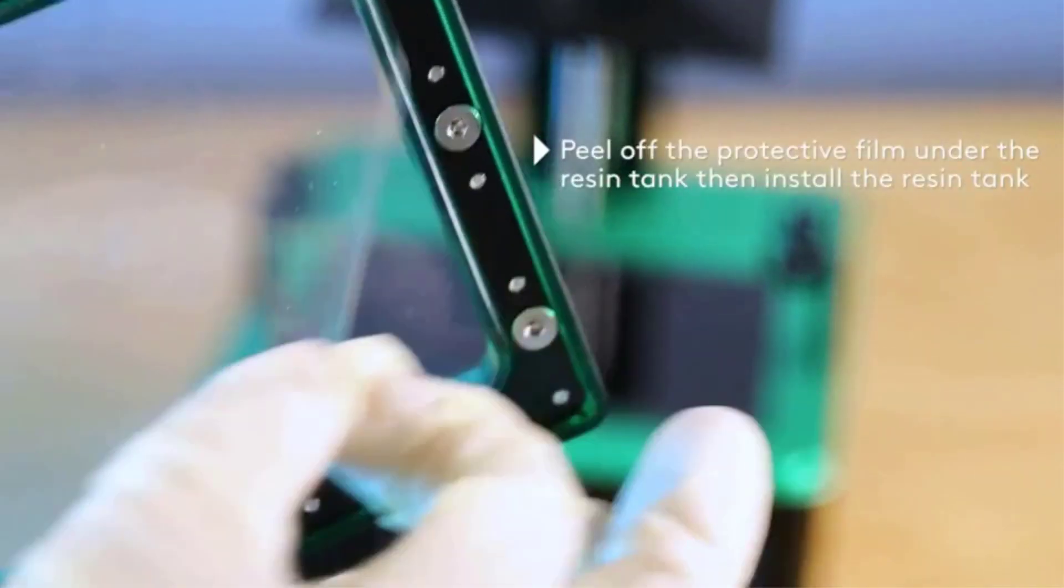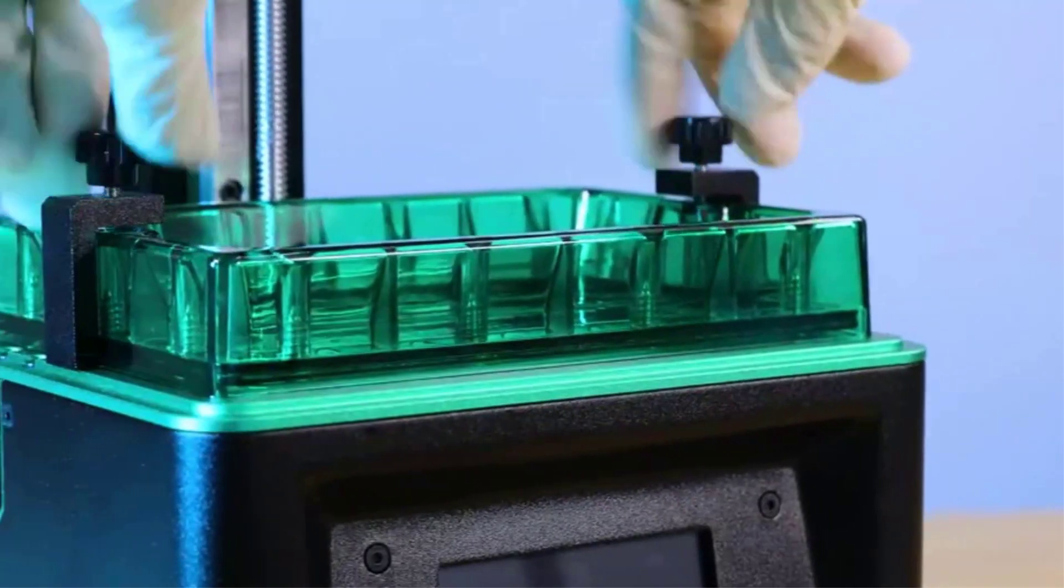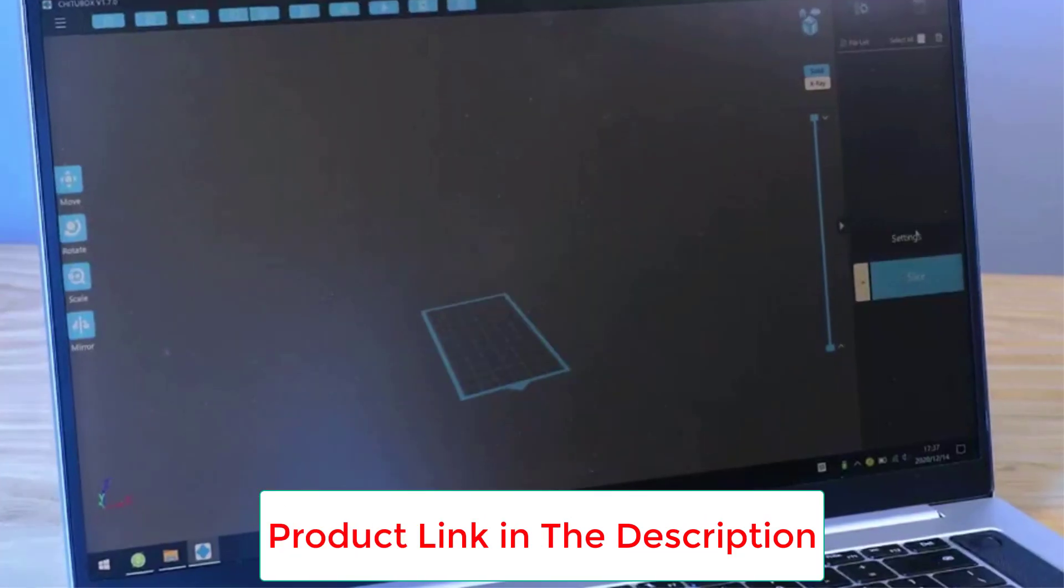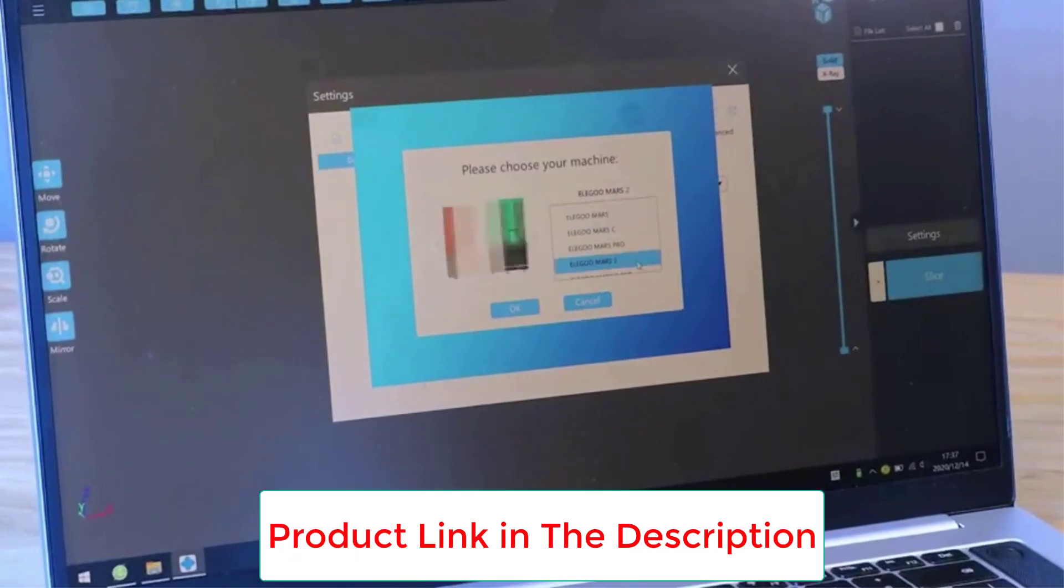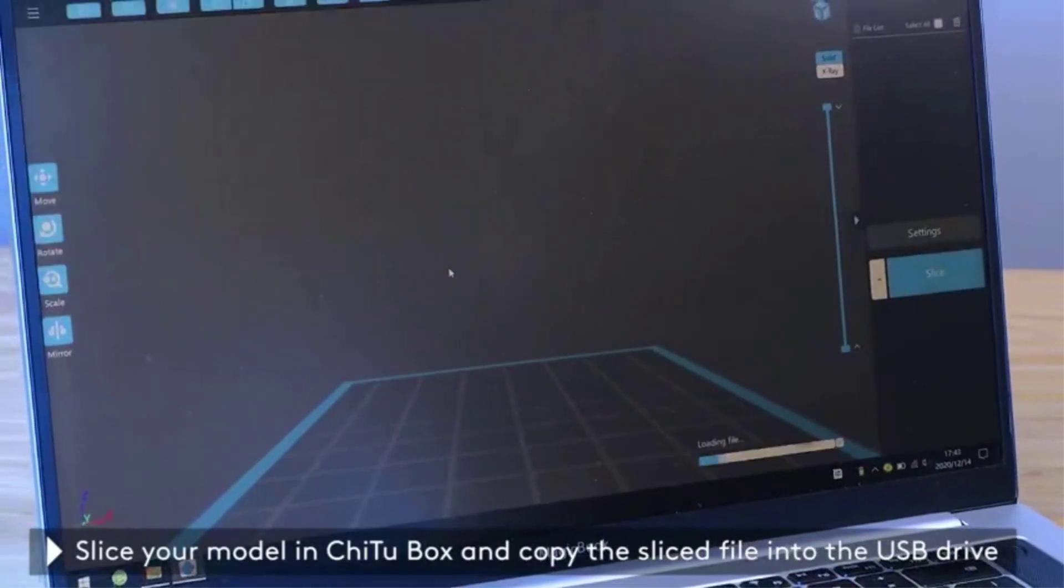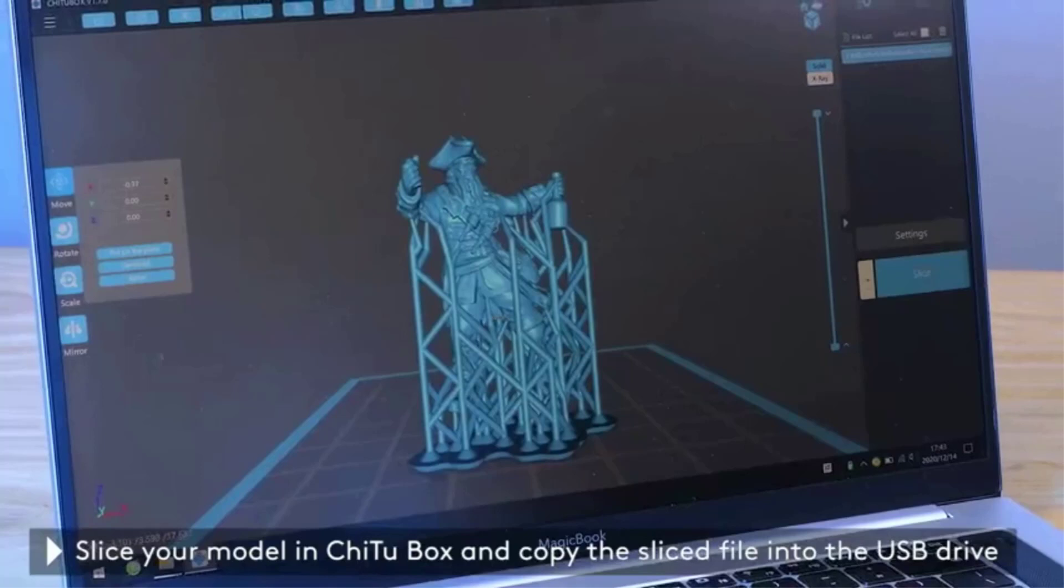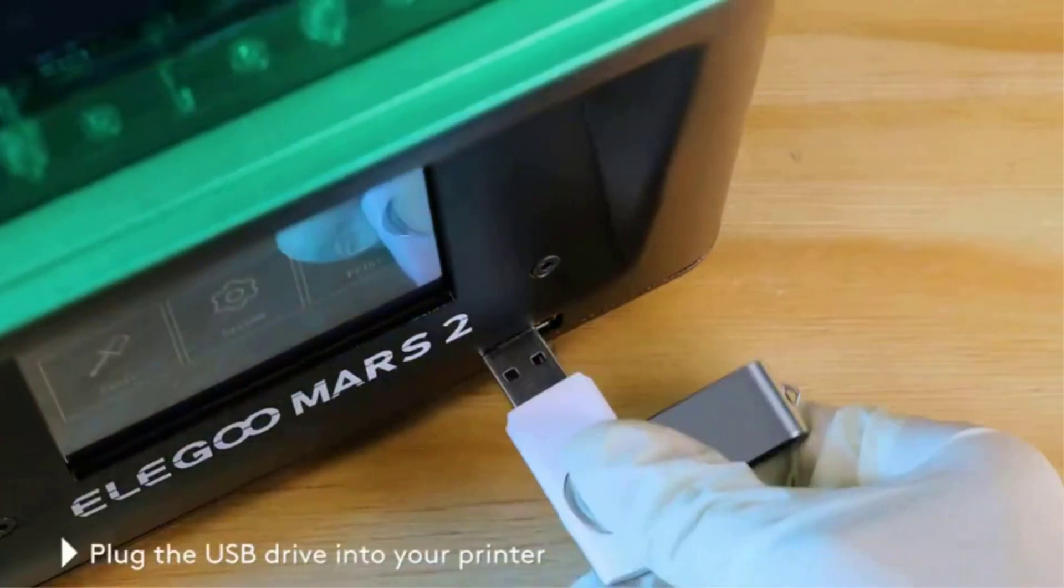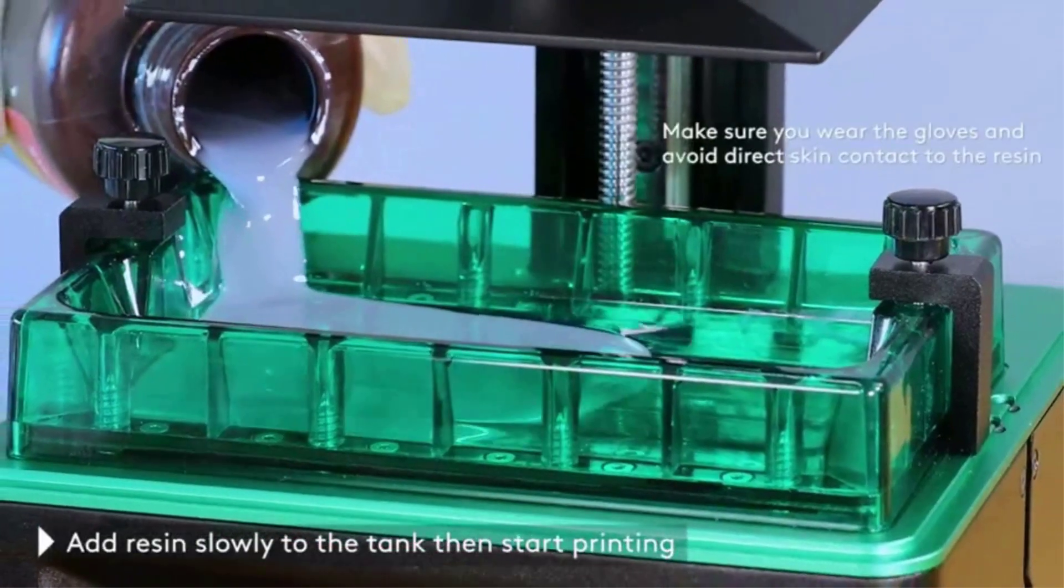CNC machined aluminum body makes Mars 2 a very formidable machine. Newly designed build plate has a much stronger adherence during printing and enables consistent printing success. Mars 2 now supports 12 kinds of languages so customers across the world could operate the 3D printer more conveniently without barriers.